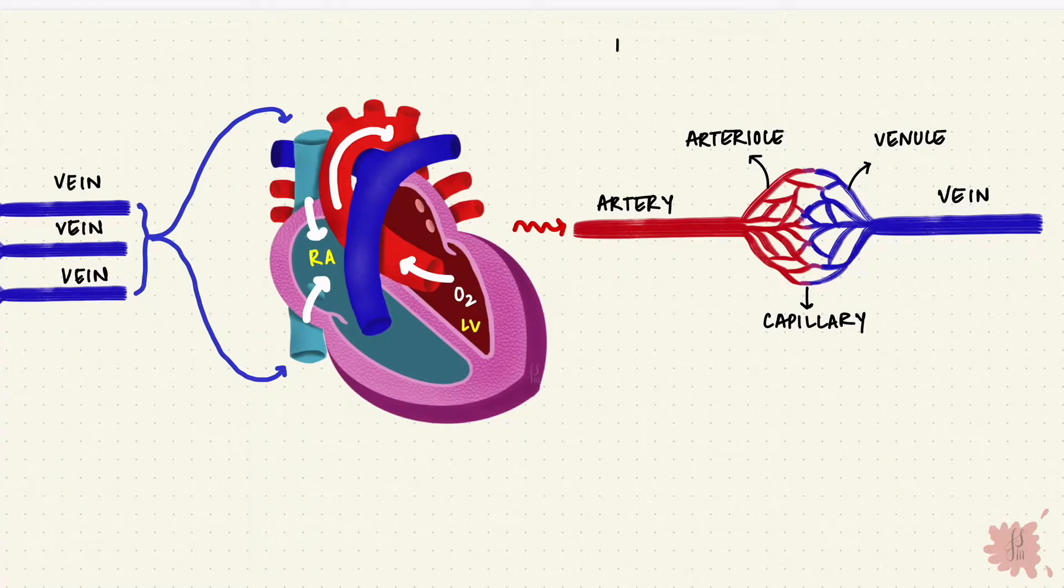So that's flow. It's the movement of blood through the vessels. But what decides which way it goes? Pressure. If the pressure throughout the system was the same, blood would just stagnate. What moves it is a pressure gradient.